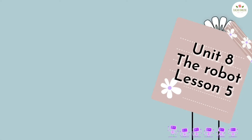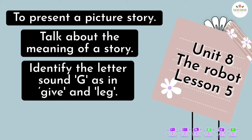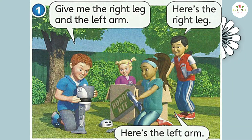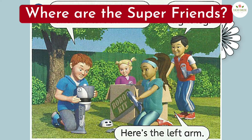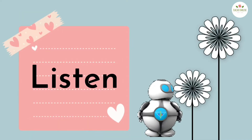Unit 8: The Robot, Lesson 5. By the end of this lesson, you should be able to present a picture story, talk about the meaning of a story, identify the letter sound 'g' as in 'give' and 'leg', and review language from the story and the unit. Activity 1: Look at the picture. Where are the super friends? In the garden with the robot. Kit: Listen to the story.